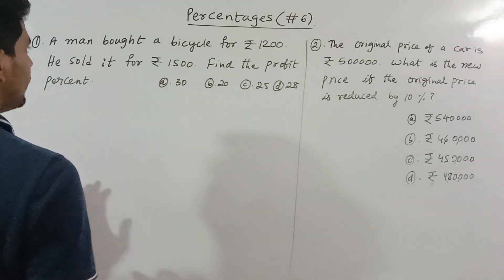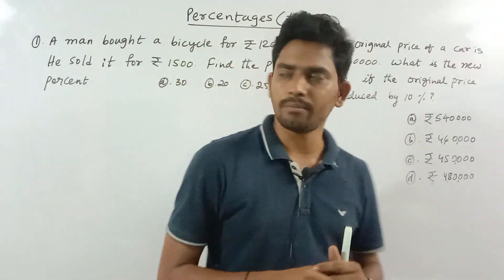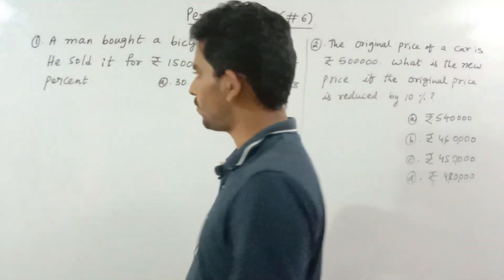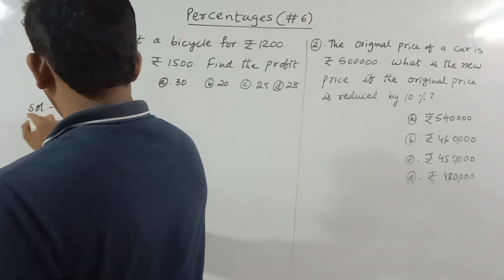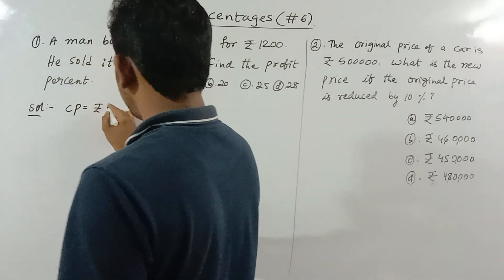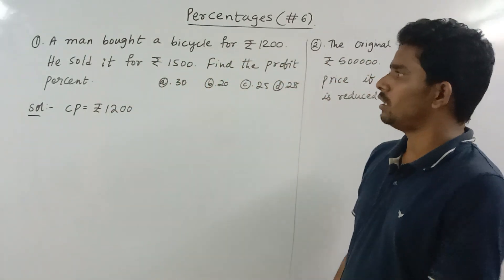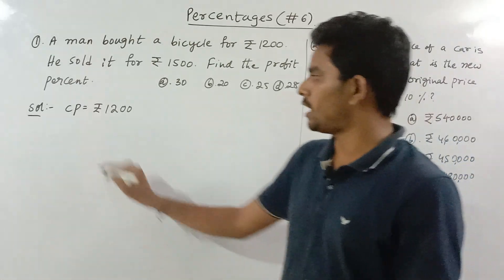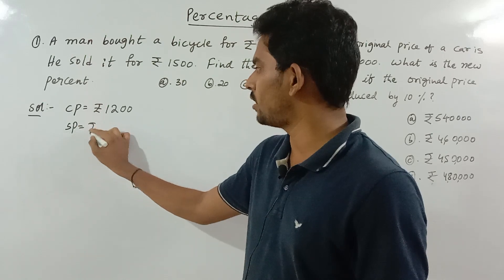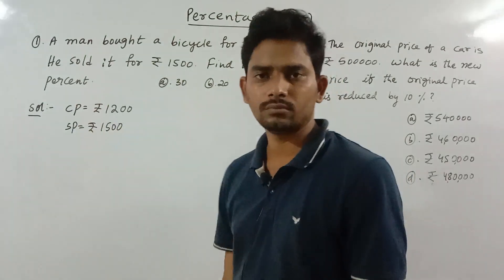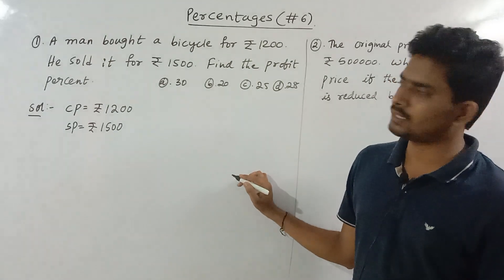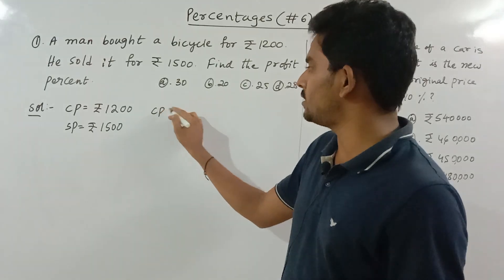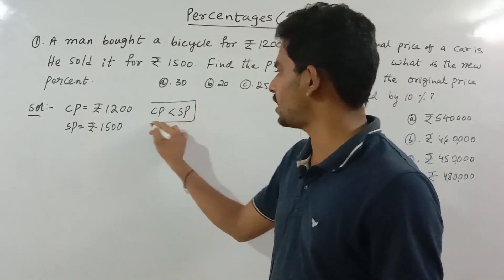A man bought a bicycle for 1200 rupees — that is the cost price (CP). He sold it for 1500 rupees — that is the selling price (SP). Find the profit percentage. Here, CP is less than SP.